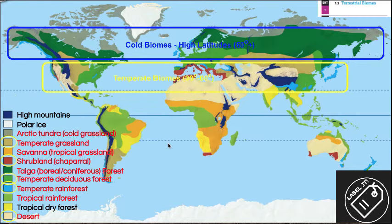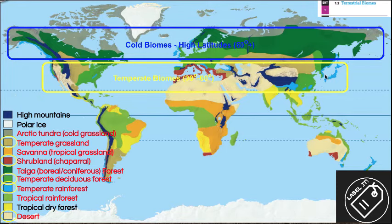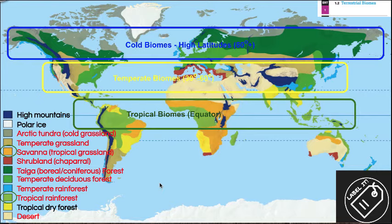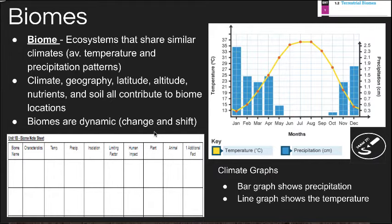Temperate biomes fall between 30 and 60 degree latitudes and include temperate grassland, shrublands, temperate deciduous forest (our home biome), temperate rainforest, and deserts. Finally, tropical biomes are primarily savannas, which are tropical grasslands, and tropical rainforests. There is a sub-designation of tropical dry forest, but the main ones to know in the tropical band are savannas and tropical rainforests.